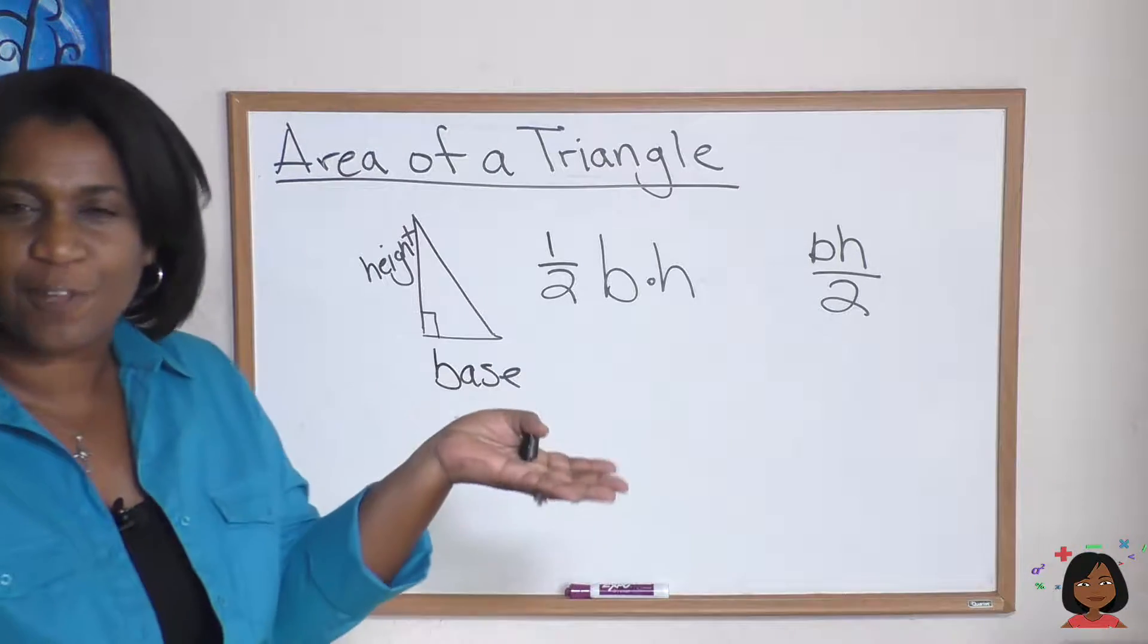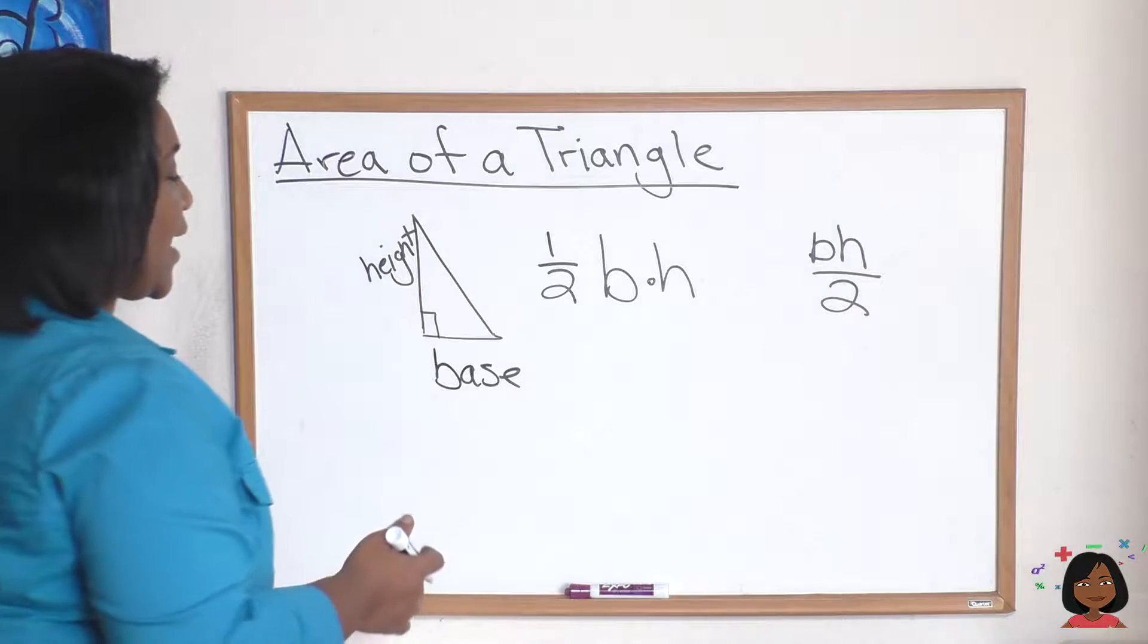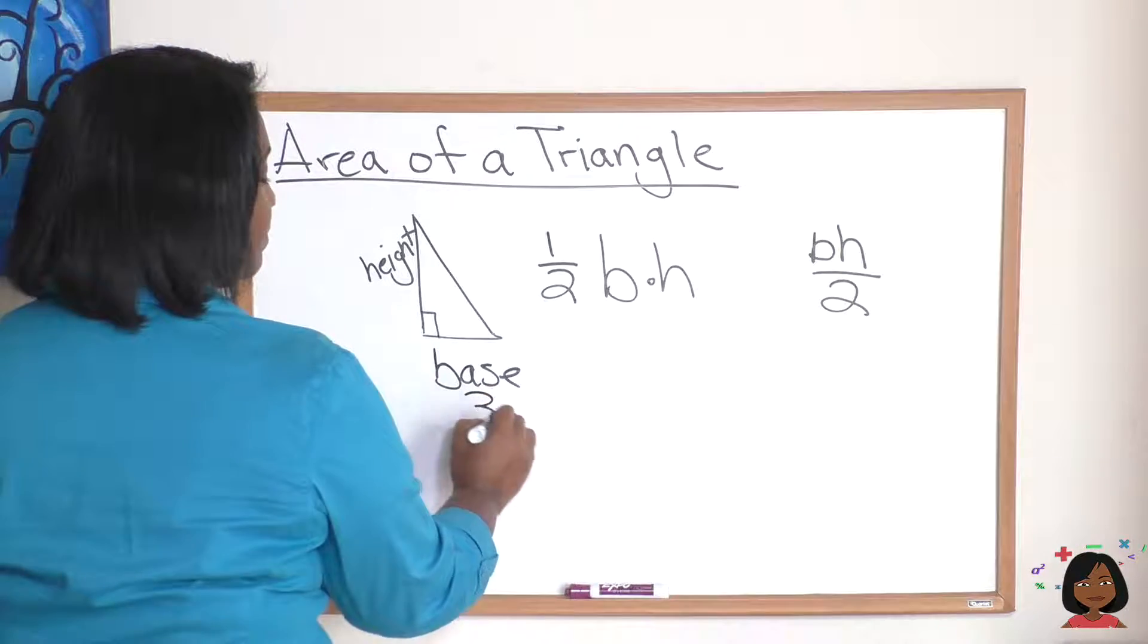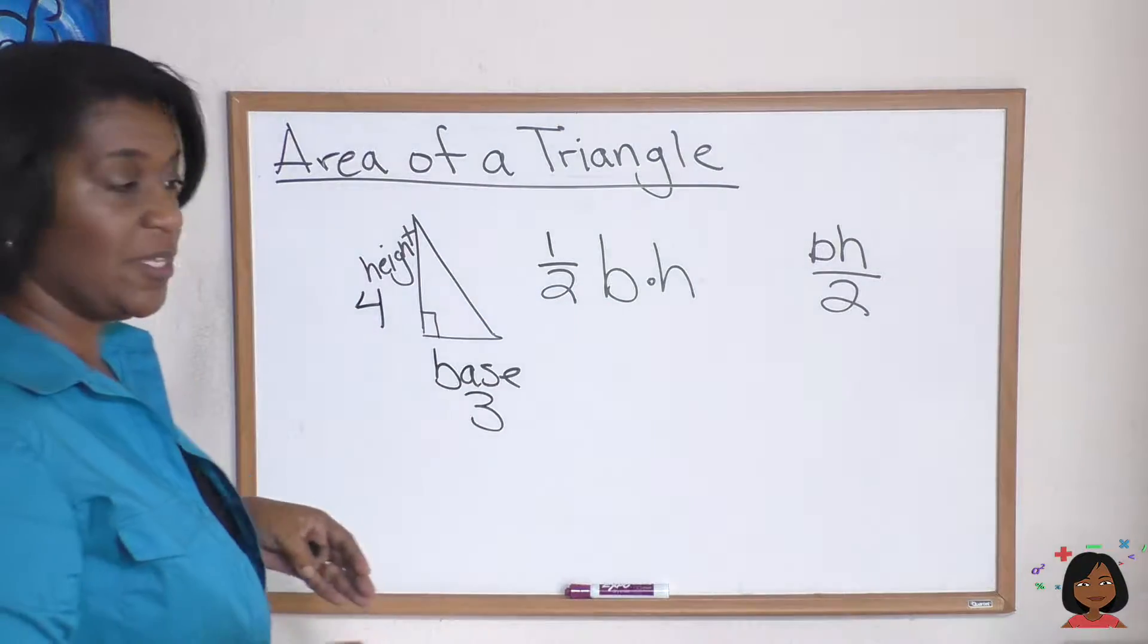Doesn't matter whichever floats your boat is the easy way to do it, but let's actually put some numbers to it. Now let's say I had a base of three and a height of four.